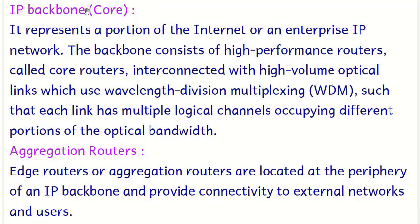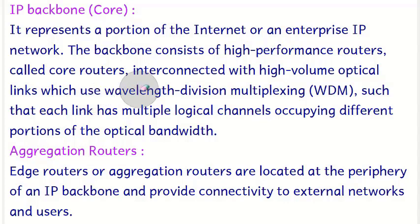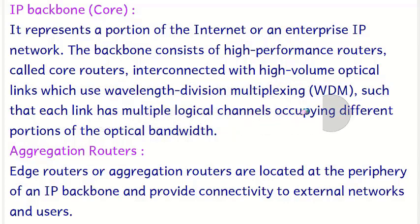The IP backbone is also called the core. It represents a portion of the internet or an enterprise IP network. The backbone consists of high-performance routers called core routers, interconnected with high-volume optical links. Optical fiber is used because it has tremendous capacity. These links use Wavelength Division Multiplexing (WDM), allowing efficient use of bandwidth, with multiple logical channels occupying different portions of the optical bandwidth.